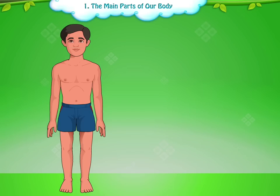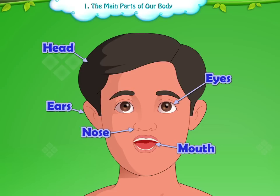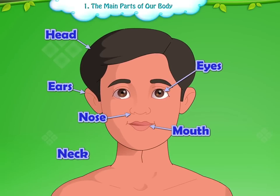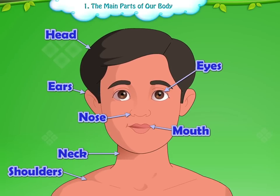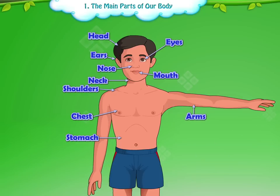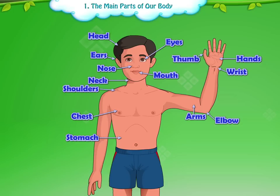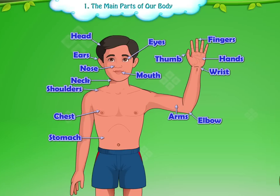Now let's recall the different parts of the body: Head, Eyes, Ears, Nose, Mouth, Neck, Shoulders, Chest, Stomach, Arms, Hands, Wrist, Elbow, Thumb, Fingers, Back.